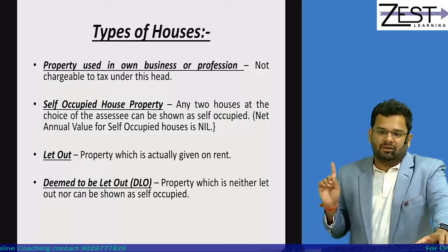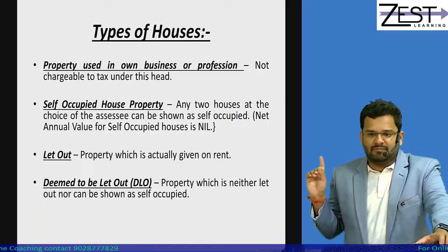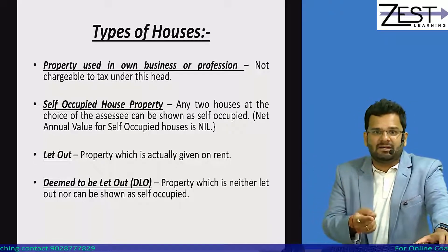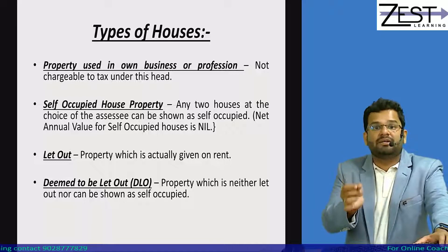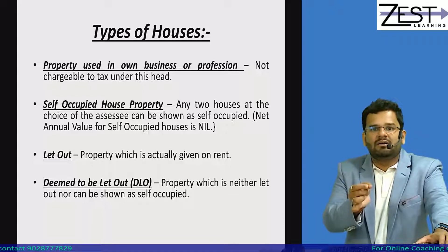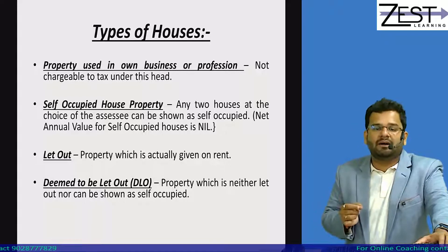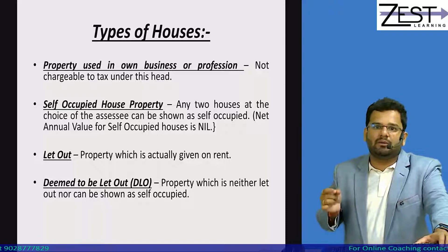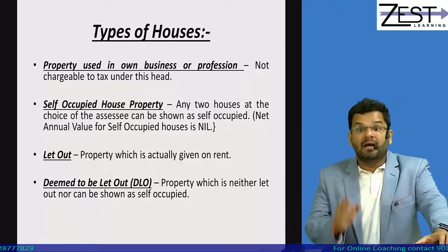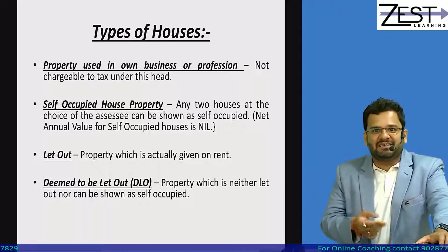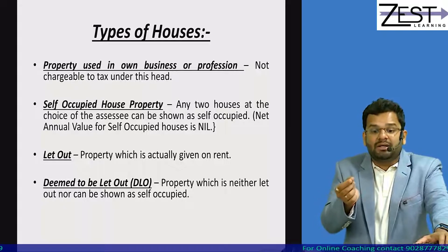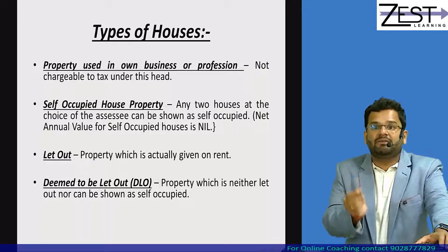Third type: let-out property. This is a property which is actually given on rent. You have to calculate its income from house property following the full format. There is also an interesting concept called 'deemed to be let out' (DLO) property.